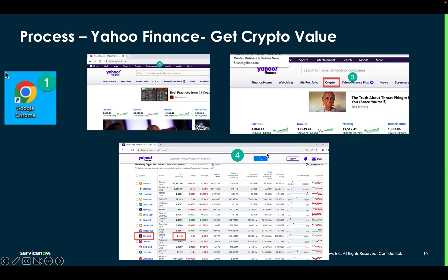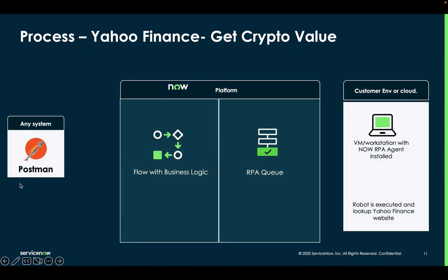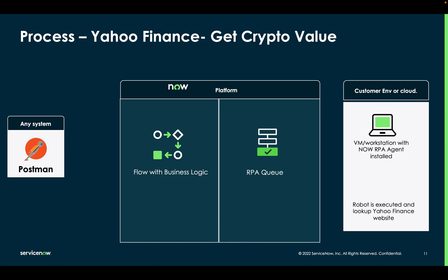The parameter of that bot process would be one of those crypto names, and the robot should return the value for that particular crypto. In my example, it would be too simple to just show a workflow on ServiceNow triggering an RPA robot, so I want to go a bit further. I'm going to be calling a workflow from Postman — a utility developers use to play with APIs — to make an API call to a ServiceNow workflow. If I can do it with Postman, any application that can make a webhook API call to ServiceNow will be able to trigger a workflow in the platform.